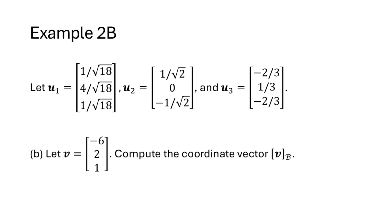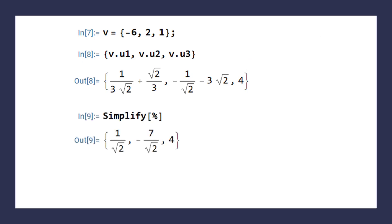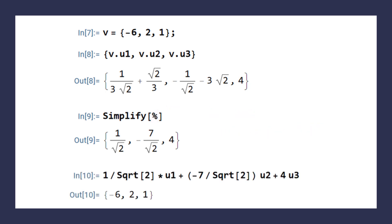For part B, using the same three vectors and the vector negative 6, 2, 1, we want to compute the coordinate vector V sub B. Since we have an orthonormal basis, we just take the dot products V dot u1, V dot u2, and V dot u3. Those three numbers are the coordinates of V in basis B. Wolfram isn't great at simplifying expressions with radicals, so we use the simplify command — the percent sign means the previous output. Finally, I verify by multiplying each coordinate times its basis vector and confirming we recover the original vector V.